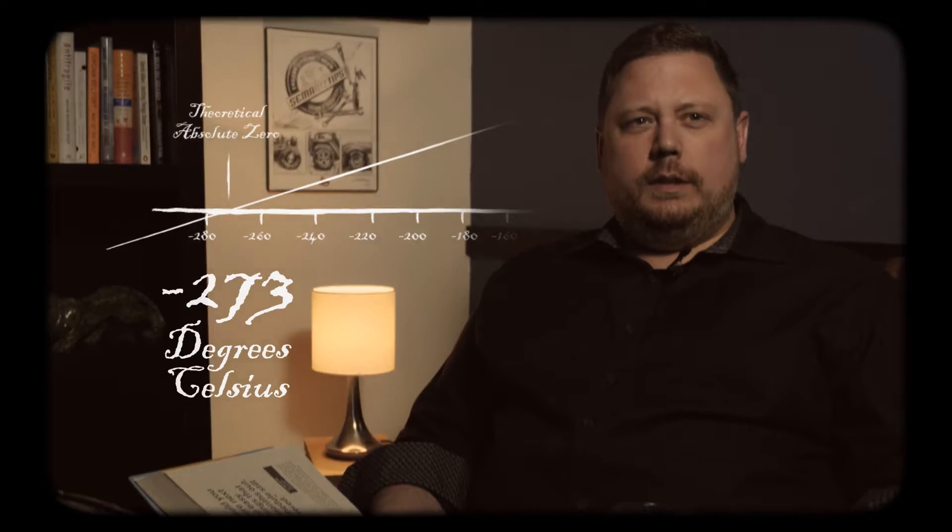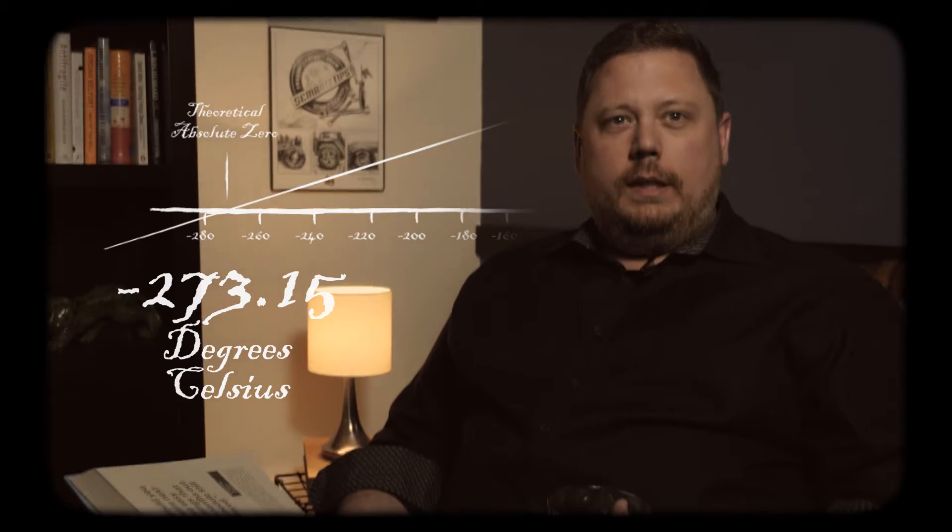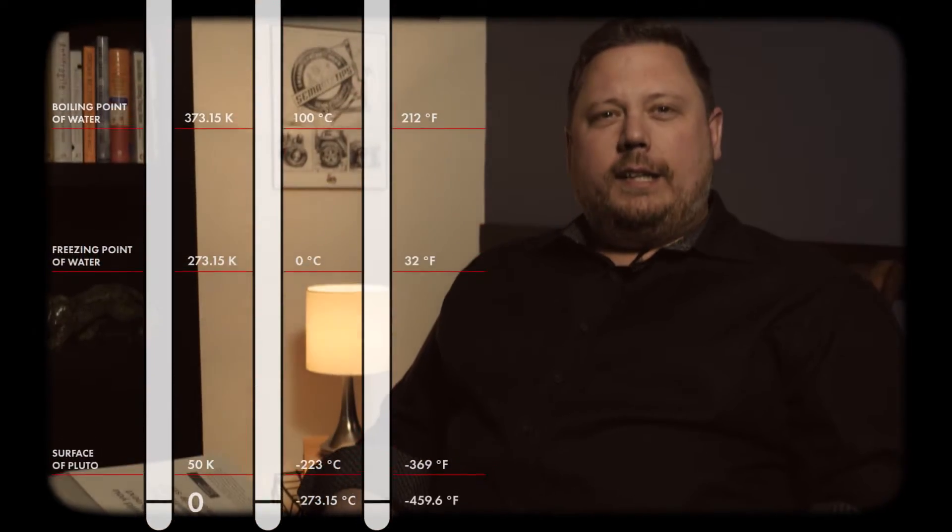In 1848, a scientist named William Thompson wrote a research paper on the theory of an absolute zero temperature scale. This theory was later developed, refined, and proven to be true, and is used today by scientists all over the world.